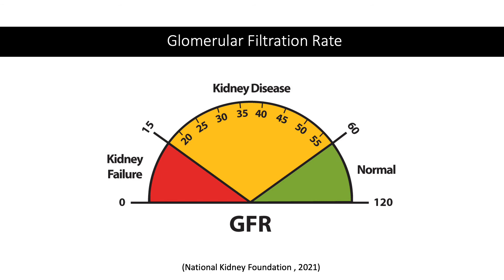Your GFR results may show one of the following: normal, which means you probably don't have kidney disease; below normal, which means you may have kidney disease; or far below normal, meaning you may have kidney failure. Although damage to the kidneys is usually permanent, you can take steps to prevent further damage. Steps may include blood pressure medications, medications to control blood sugar if you have diabetes, lifestyle changes such as getting more exercise and maintaining a healthy weight, moderating alcohol, and stopping smoking.